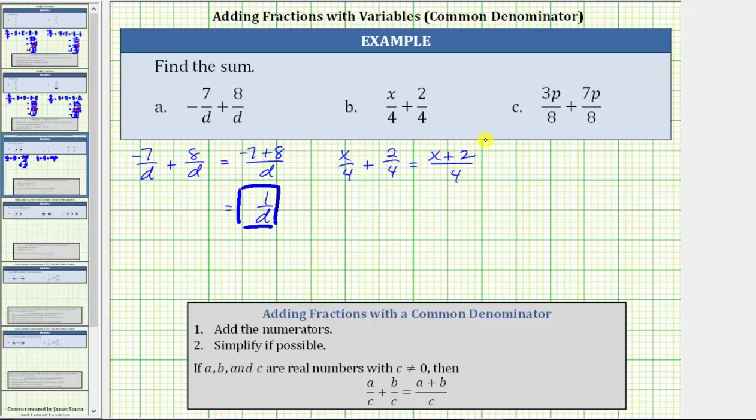Now we need to be careful here. It may be tempting to try to simplify the two and the four, but we cannot do this because we cannot simplify across addition or subtraction. Therefore, this fraction does not simplify. This is the sum.